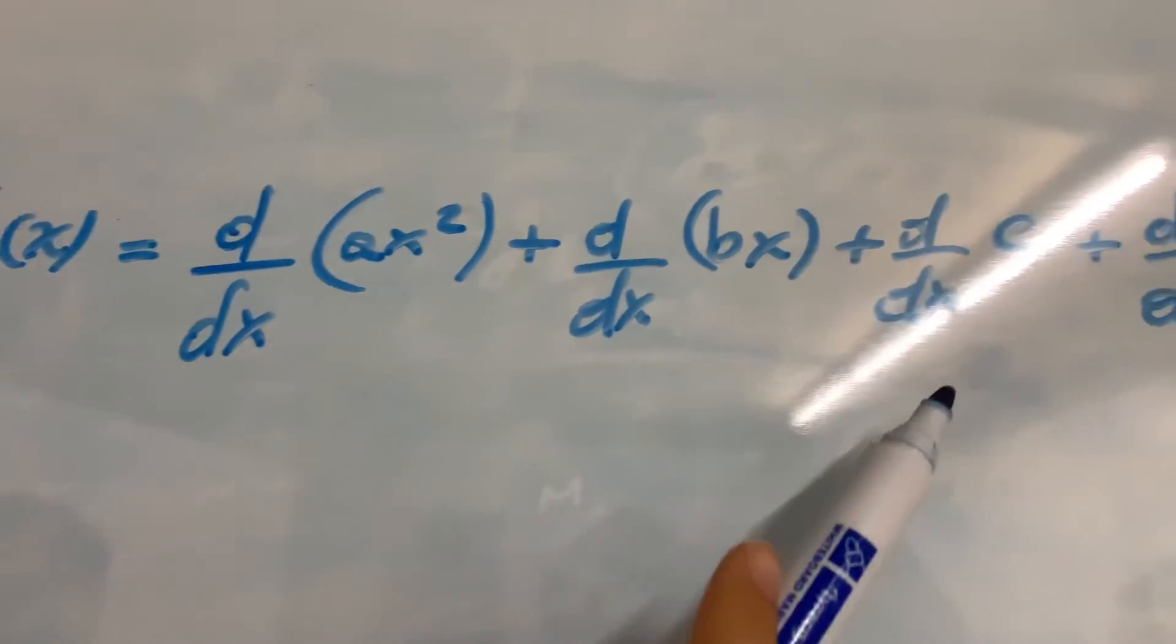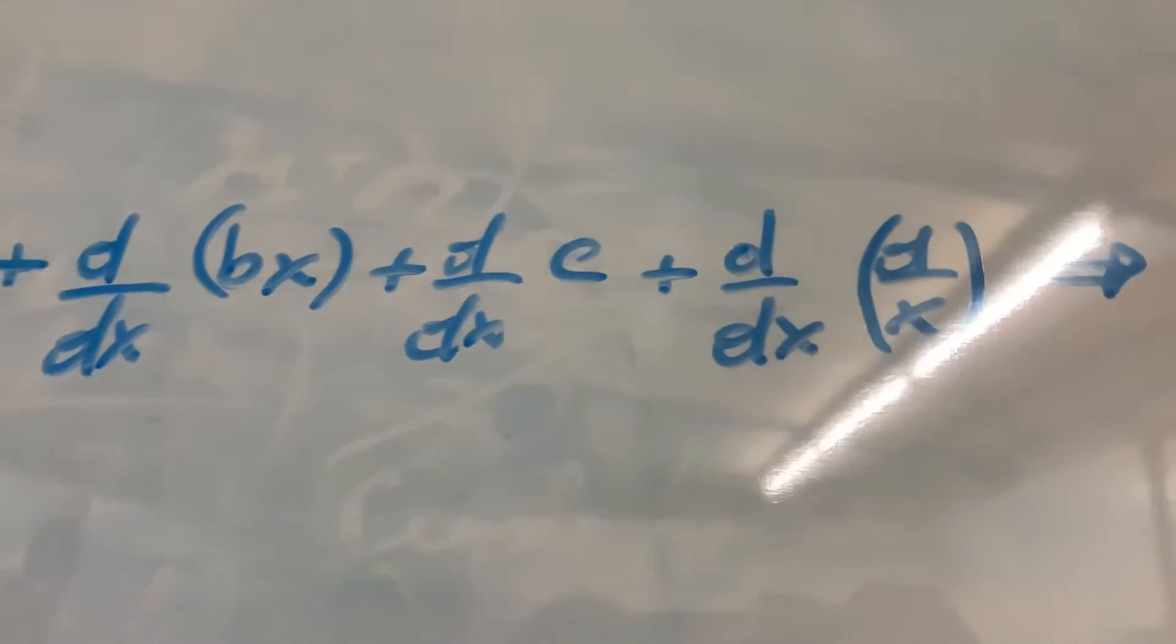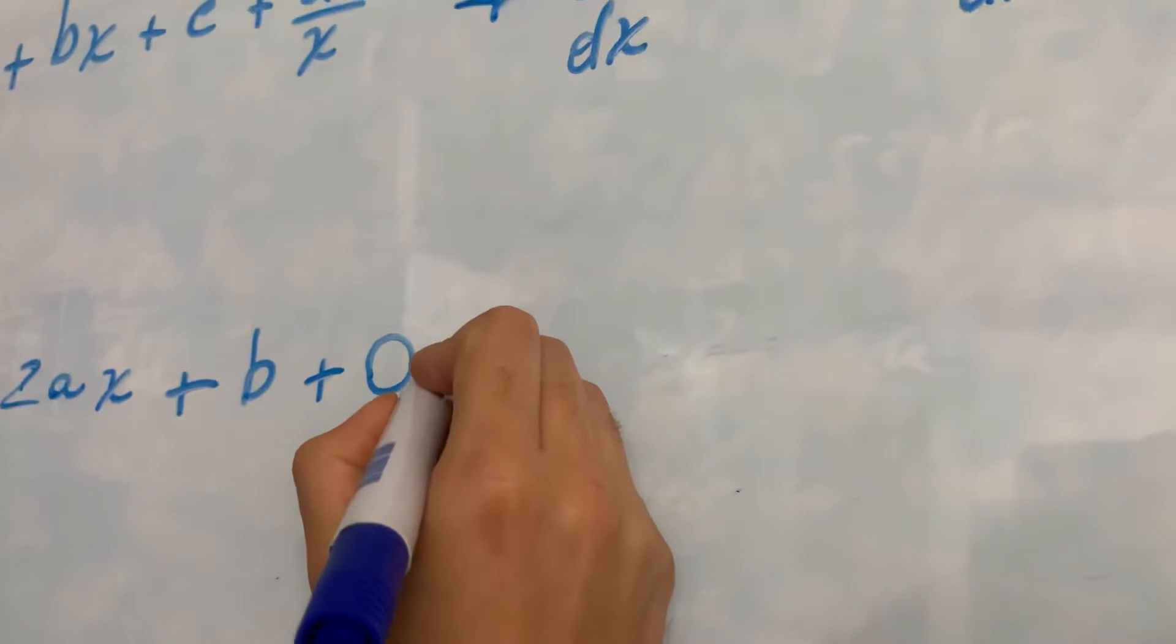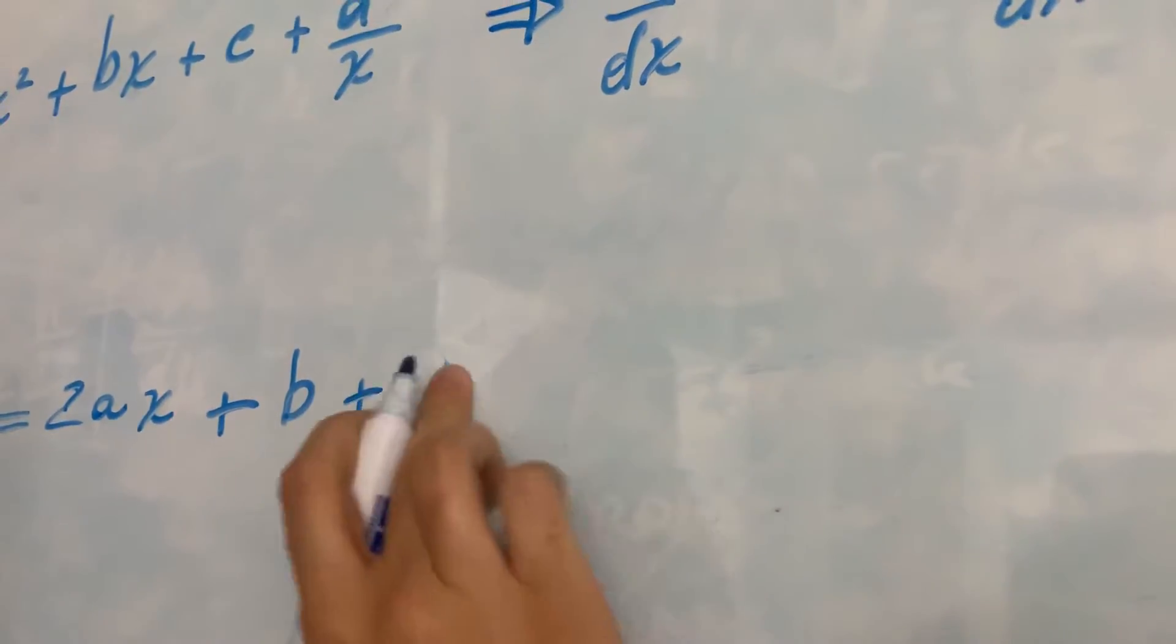Then we have the derivative of a constant, and the derivative of a constant is always 0.